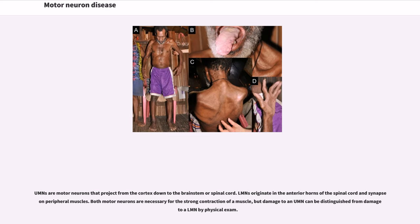UMNs are motor neurons that project from the cortex down to the brainstem or spinal cord. LMNs originate in the anterior horns of the spinal cord and synapse on peripheral muscles. Both motor neurons are necessary for the strong contraction of a muscle, but damage to an UMN can be distinguished from damage to a LMN by physical exam.